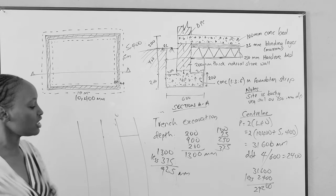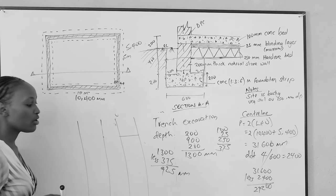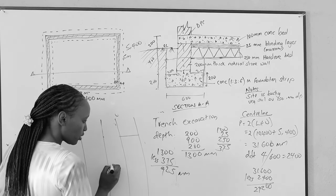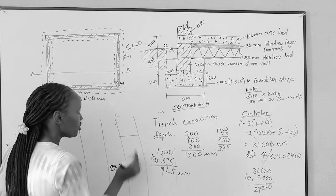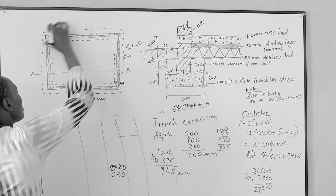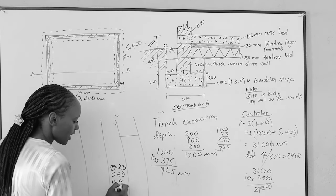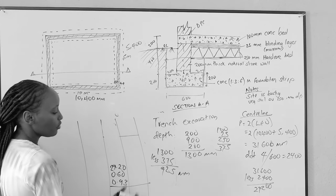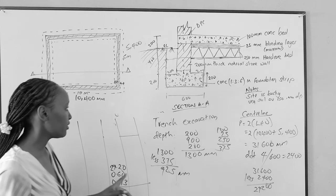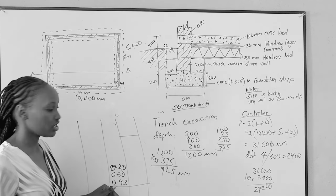The depth of the trench is 925mm. When filling in the dimensions, we only enter: length, width, then depth. So the length is 29.20m (the center line), the width is 0.6m, and the depth is 0.93m. Multiplying these gives the volume of soil to be excavated. We write: 'excavate for trench from formation level.'